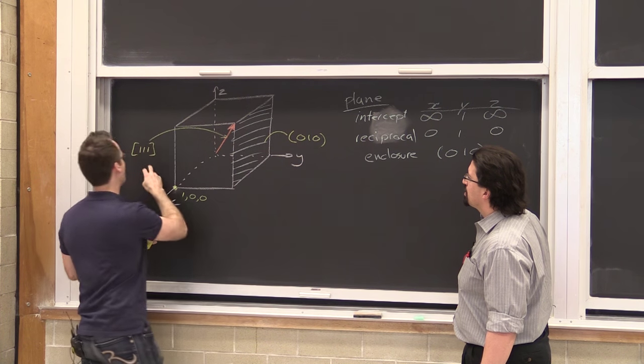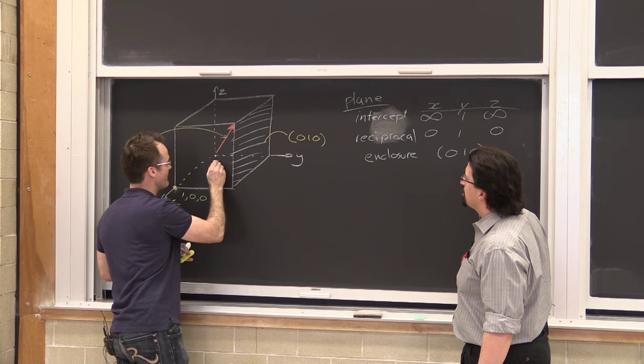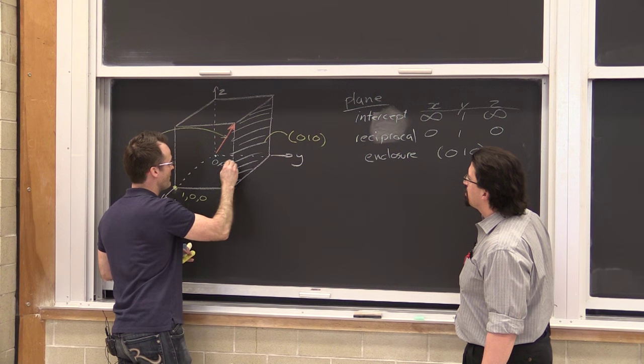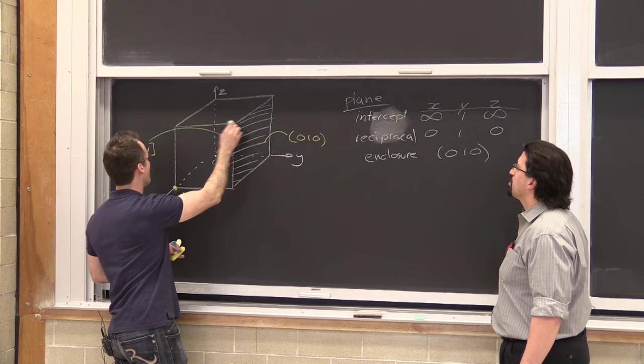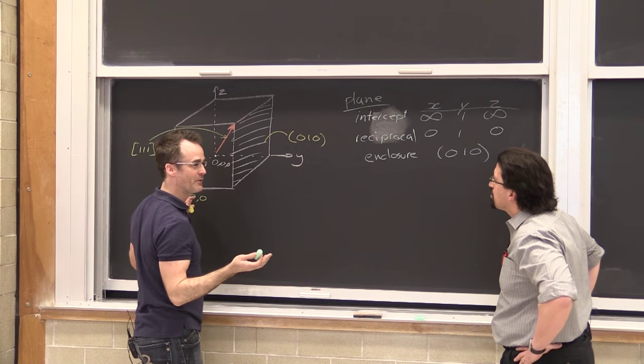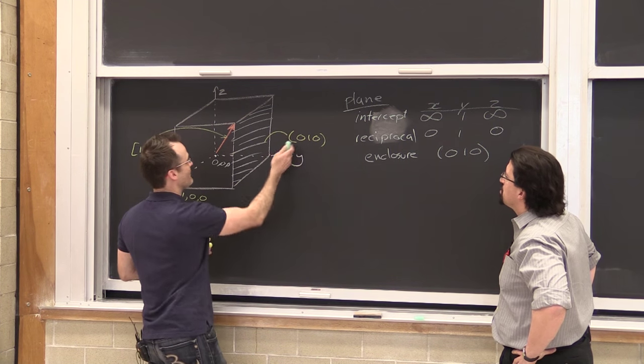So this is a direction here. We've got one, one, one. If we start with our origin here, zero, zero, zero, the point coordinates of the head of the vector are one, one, and one. We've got our vector. It's beautiful. It's enclosed in square brackets, so we know it's a vector.